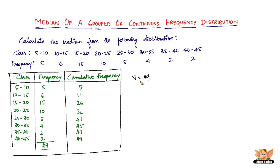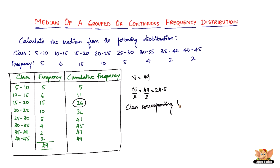So N is 49. What we have to do is the same as in the previous problems — divide N by 2. So it becomes 49 divided by 2, which is 24.5. Now we look into the cumulative frequency for a number that is just greater than 24.5, which is 26. The class corresponding to 26 is 15 to 20.